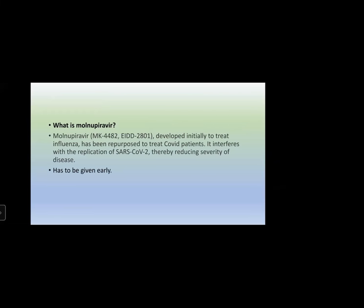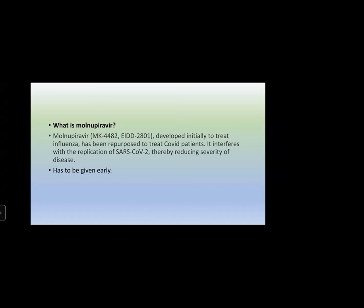Molnupiravir — also known as MK-4482 or EIDD-2801 — was initially developed to treat influenza and has been repurposed to treat COVID patients. It interferes with the replication of SARS-CoV-2, reducing the severity of the disease. It is an orally available drug, which is a major advantage. Replication is inhibited and it must be given early in the course of the disease, as once ARDS sets in, it is difficult to recover the patient.